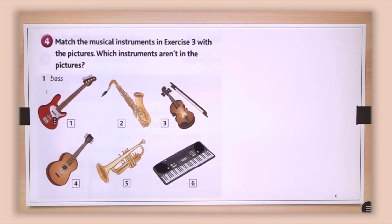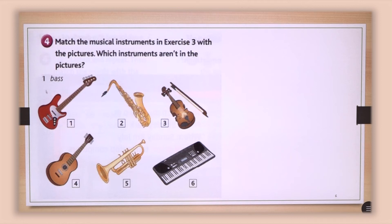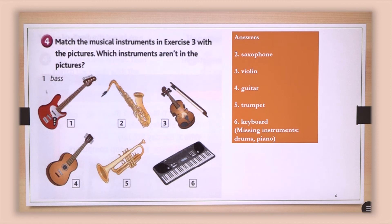Here we have some types of musical instruments that we just mentioned. You are going to write next to each musical instrument its name, and then tell which musical instruments are missing in the picture. Let's check: the first one is bass — already written. The second is saxophone, the third violin, the fourth guitar, the fifth trumpet, the sixth keyboard. The missing instruments are drums and piano.